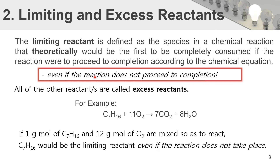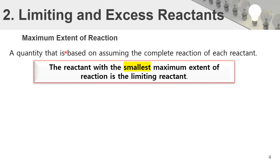There is another way to find the limiting and excess reactant using the maximum extent of reaction. This is a quantity based on assuming the complete reaction of each reactant. We assume all quantities have been completely consumed, apply the extent of reaction relationship to the reactant side, and find which value is the smallest — that smallest value corresponds to the limiting reactant.